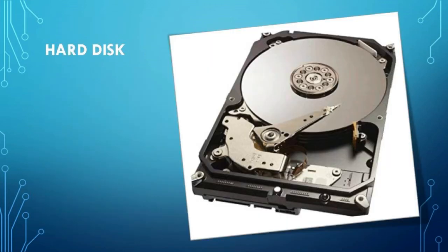Hard disk is a metallic disk coated with magnetic material which is permanently fixed inside the computer. It is kept in an airtight environment that protects the disk from being damaged and also to resist dust. The access speed — that is the reading and writing speed — is more in the case of hard disk. They generally have large storage capacity which is measured in terms of gigabytes. Hard disk with a storage capacity of 4 terabytes is also available. The capacity of the disk is likely to increase in future.